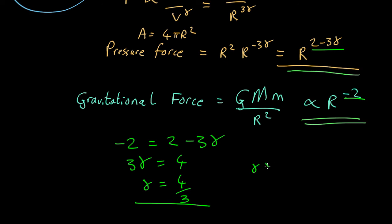If gamma is greater than 4 thirds, then the star is stable. Because the pressure will increase faster than the gravity when you push some shell inwards. If, on the other hand, gamma is less than or equal to 4 thirds, it's unstable.